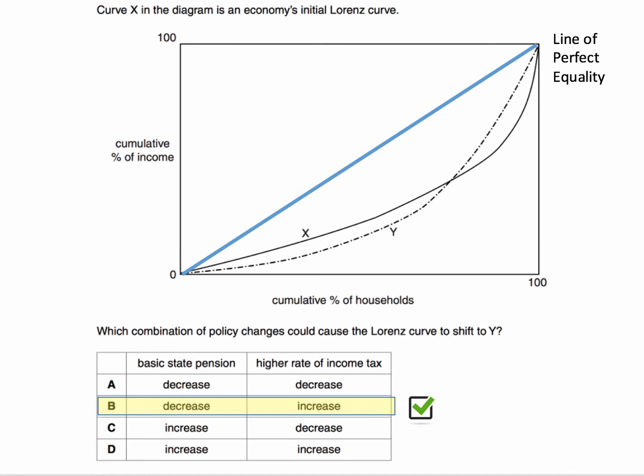So what's happened between X and Y? At lower levels of income for the relatively poorer households, there has been an increase in inequality. Whereas for the richest two quintiles — the richest 40% of households — there's actually been a decrease in inequality because they're getting less of the income. The Lorenz curve is closer to the line of equality. So more inequality for relatively poorer households, less inequality for the relatively richer households.